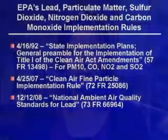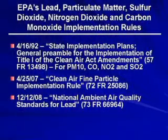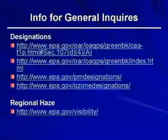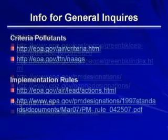EPA is working on additional implementation rules to meet the eight-hour ozone NAAQS. EPA has promulgated several implementation rules for the other criteria pollutants. On July 15, 2009, EPA proposed the primary NAAQS for nitrogen dioxide. Information concerning implementation for the proposed NO2 NAAQS is contained in the proposed rule. For SO2, EPA is in the process of reviewing the NAAQS and plans on proposing the implementation rule with the NAAQS in November of 2009. For additional information on designations, regional haze, criteria pollutants and the NAAQS, and implementation rules, please refer to the websites listed on the screen.